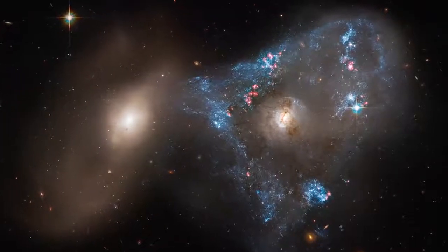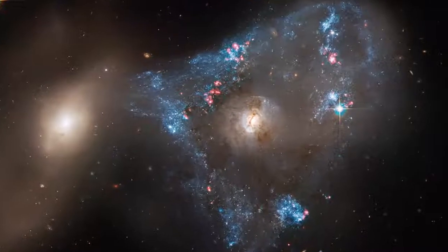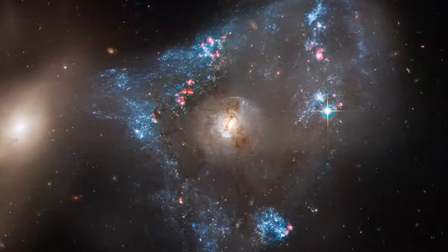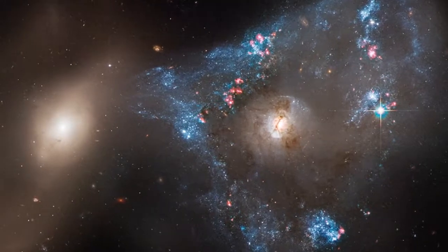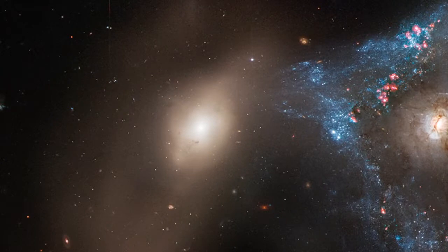This interacting galaxy duo, called ARP 143, holds the distorted star-forming spiral galaxy NGC 2445 at the right, along with its less flashy companion, NGC 2444, at the left.